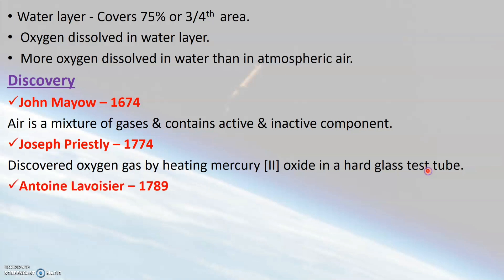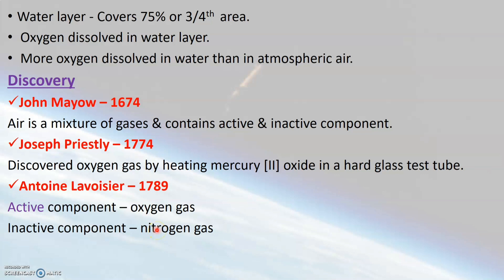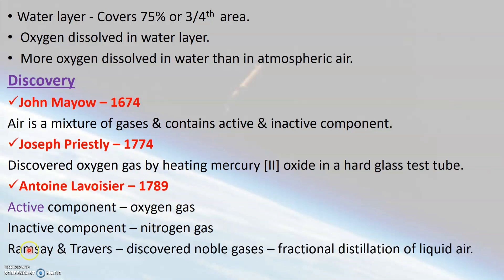Later, in the year 1789, another scientist named Antoine Lavoisier named the active component of air as oxygen gas and the inactive component as nitrogen gas. After the discovery of the noble gas argon by William Ramsey, Ramsey and William Travers discovered other noble gases like helium, neon, krypton, xenon, and radon through the method of fractional distillation of liquid air, where air was cooled to a very low temperature to convert it into a liquid.